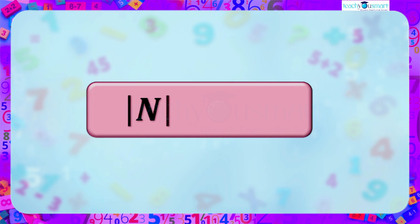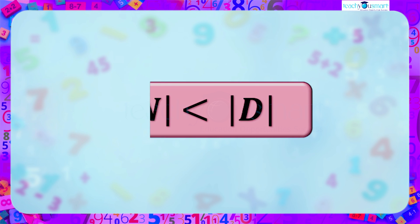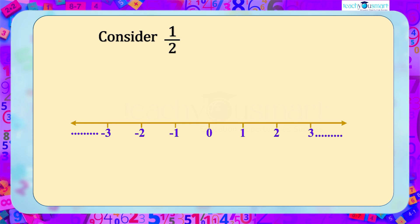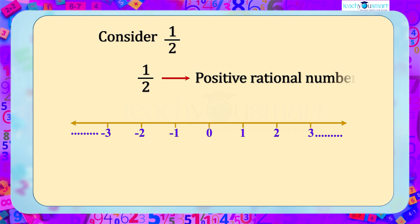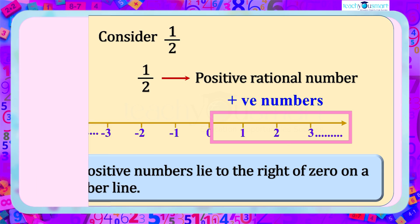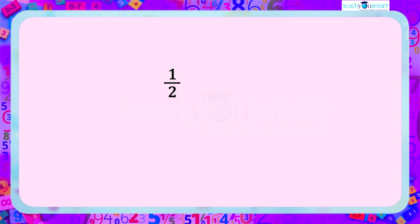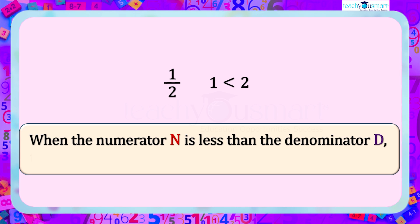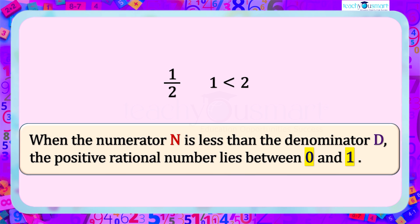Let's start with rational numbers in which the numerator is less than the denominator. First, consider the rational number 1/2. To which side of 0 will we mark 1/2? 1/2 is a positive rational number, and we know that all positive numbers lie to the right of 0 on a number line. Here in 1/2, the numerator 1 is less than the denominator 2. When the numerator N is less than the denominator D, the positive rational number lies between 0 and 1.